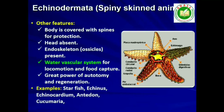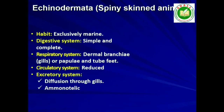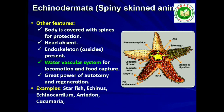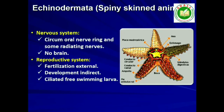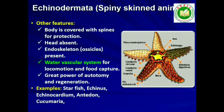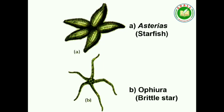Ninth is Phylum Echinodermata. These animals have an endoskeleton of calcareous ossicles, hence the name Echinodermata (spiny bodied). All are marine with organ system level of organization. The adult echinoderms are radially symmetrical but larvae are bilaterally symmetrical. They are triploblastic and coelomate animals. Digestive system is complete with mouth on the lower (ventral) side and anus on the upper (dorsal) side. The most distinctive feature of echinoderms is the presence of water vascular system, which helps in locomotion, capture and transport of food, and respiration. Excretory system is absent. Sexes are separate. Reproduction is sexual. Fertilization is usually external. Development is indirect with free-swimming larva. Examples: Asterias (starfish), Echinus (sea urchin), Antedon (sea lily), Cucumaria (sea cucumber) and Ophiura (brittle star).